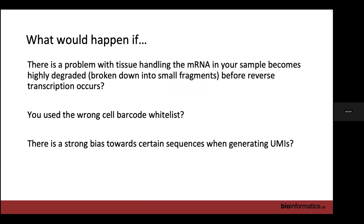What would happen if there's a strong bias towards certain sequences when generating UMIs? We would under-count the amount of mRNA molecules we actually capture, because we'll get more mRNA molecules with the same UMI.